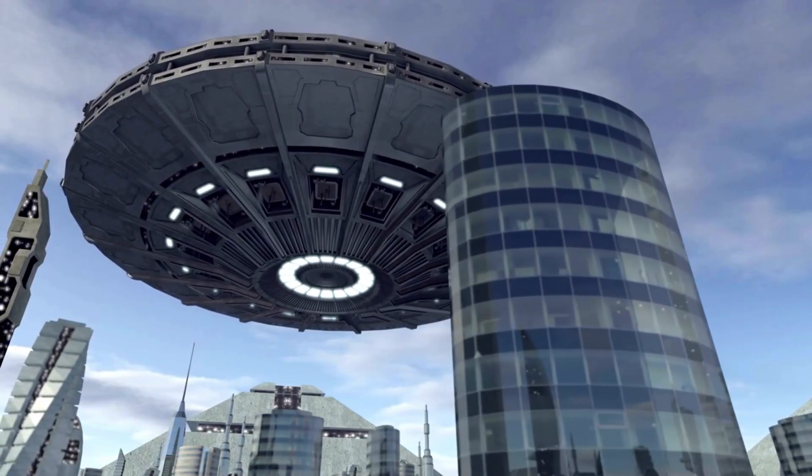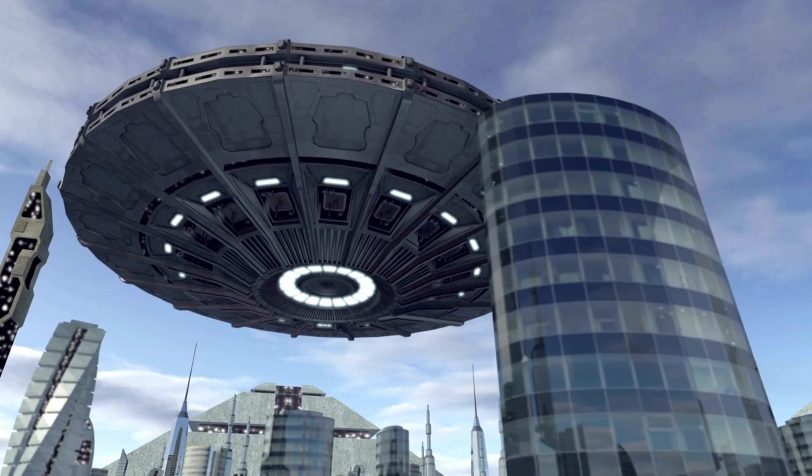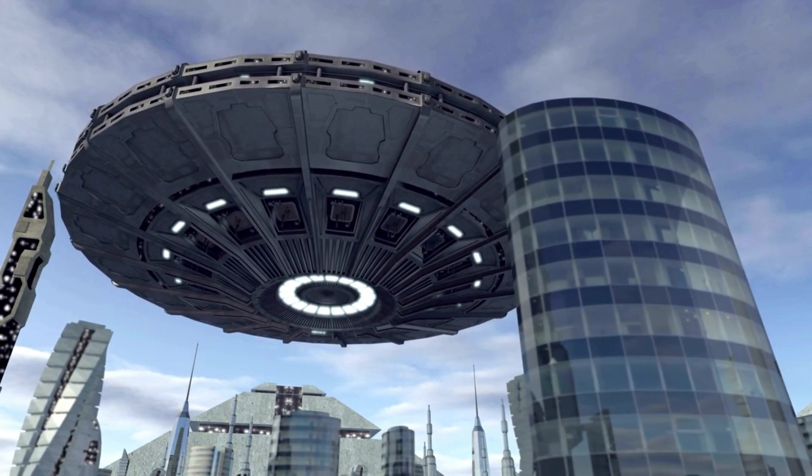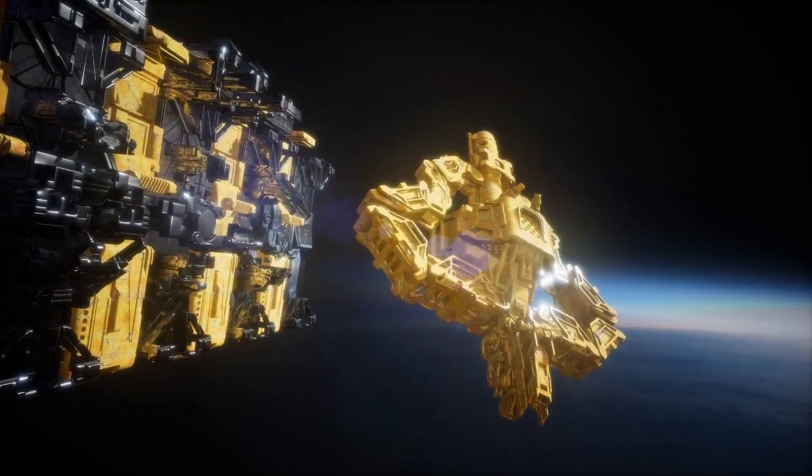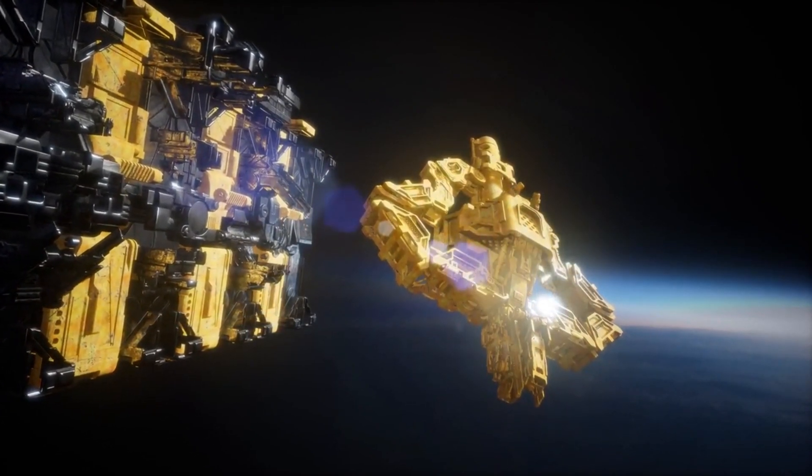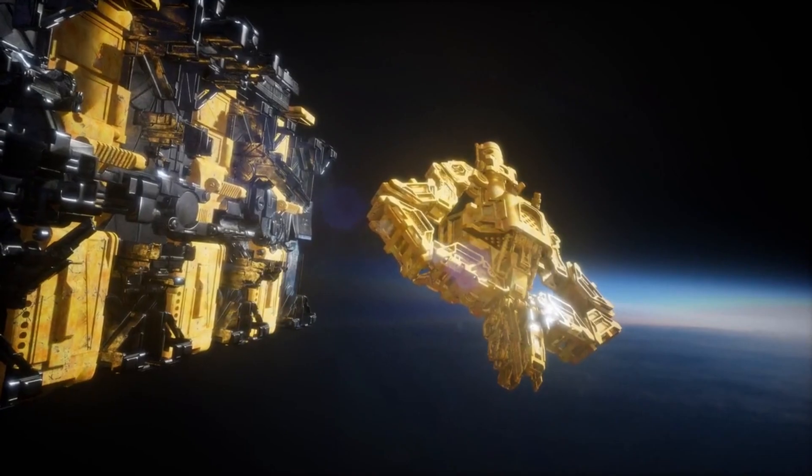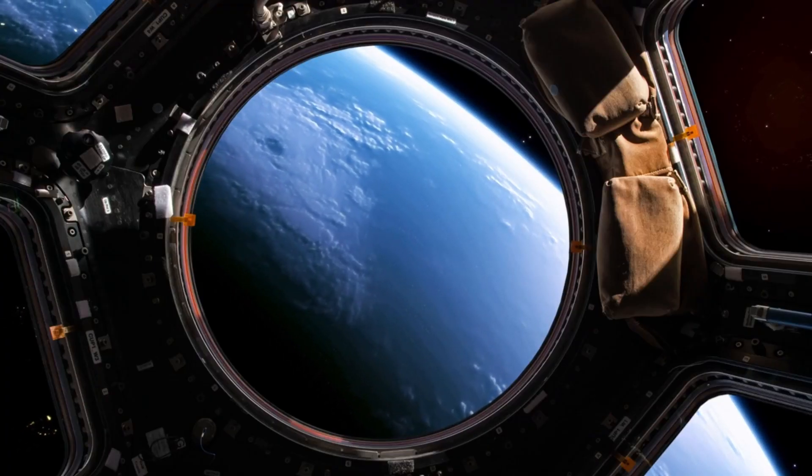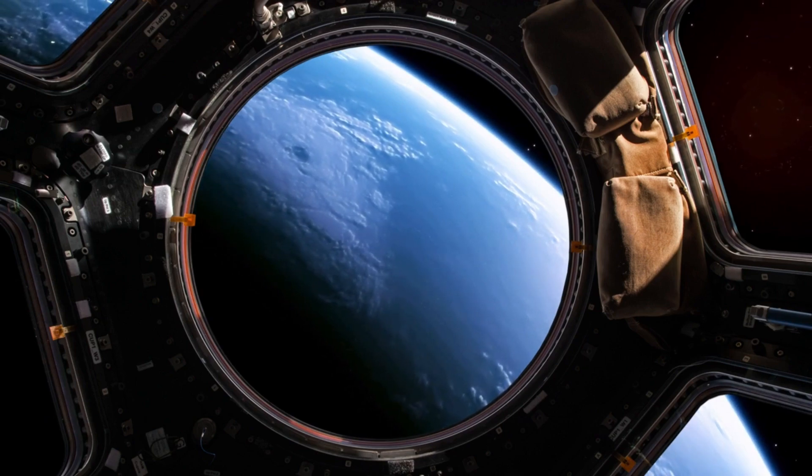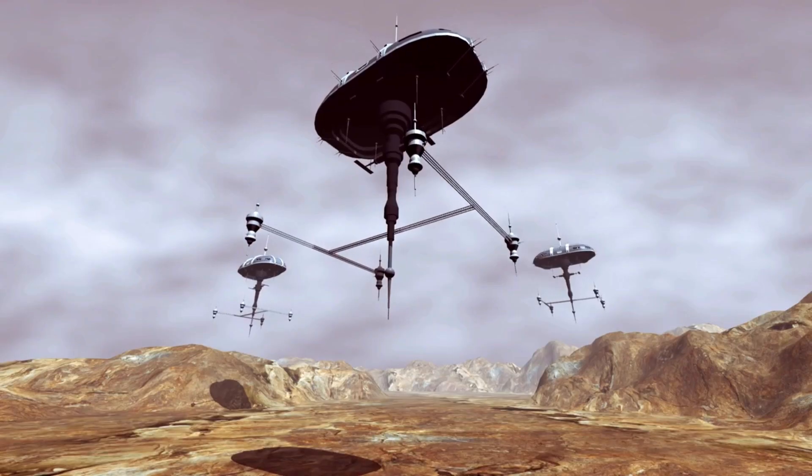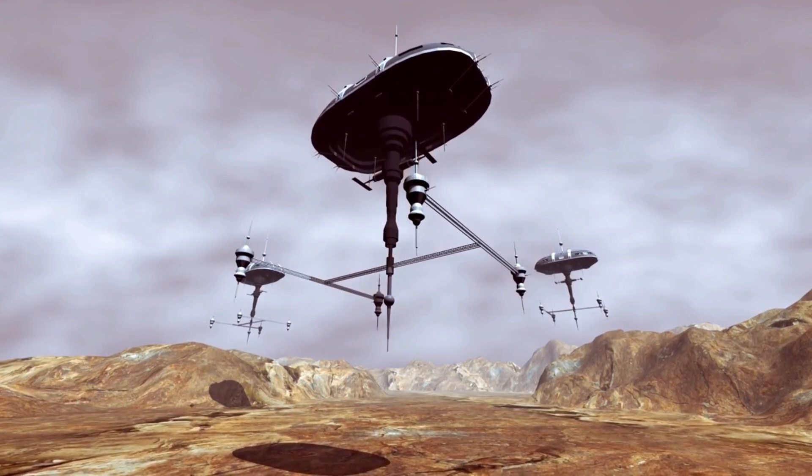One instrument that has captured the attention of astronomers is the James Webb Telescope. After several delays, the telescope was finally launched in 2018 and will help us determine whether there is life on Proxima b. As with all scientific endeavors, things are never as clear as they seem. Various modifications were required to ensure that the James Webb Telescope delivers accurate images.